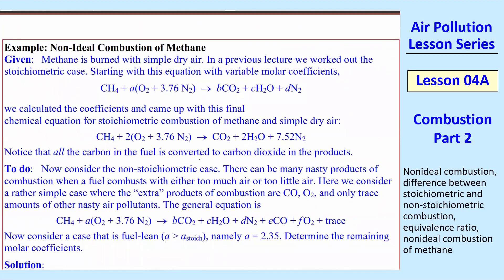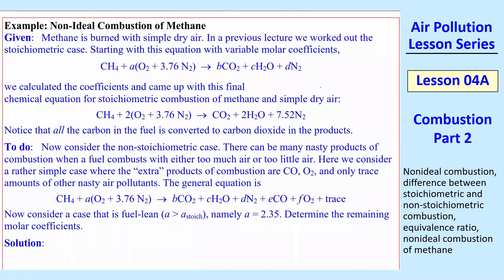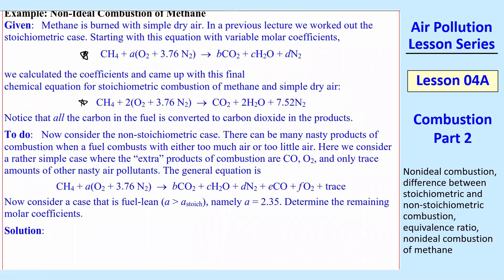So let's do an example problem. And I'll use methane here as our example again. Methane is burned with simple dry air just like before. And this is what we had. Our previous equation was the same as this. And we calculated those stoichiometric molar coefficients. And we came up with this equation for stoichiometric combustion. That means that this A stoic is 2 because our A is 2 for stoichiometric combustion. So A stoic equal 2. And again, all the carbon in the fuel is converted to CO2 and there's nothing else.